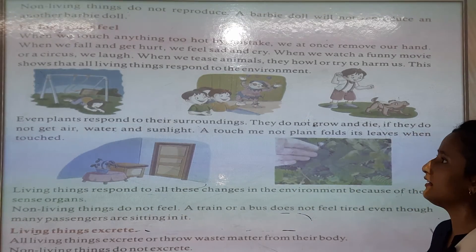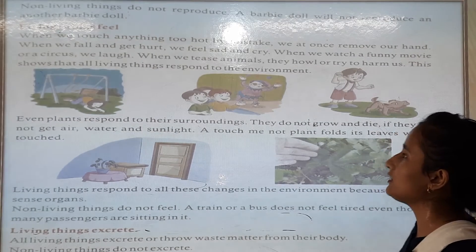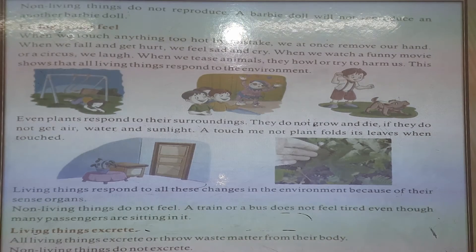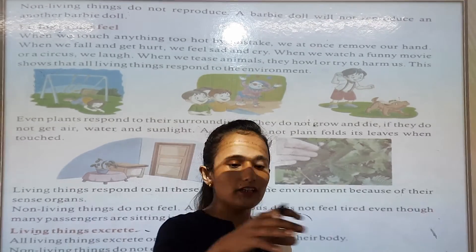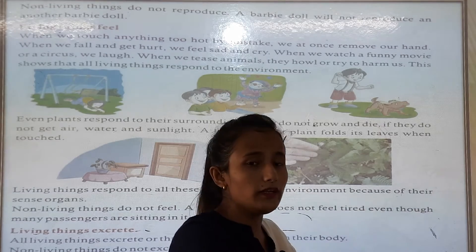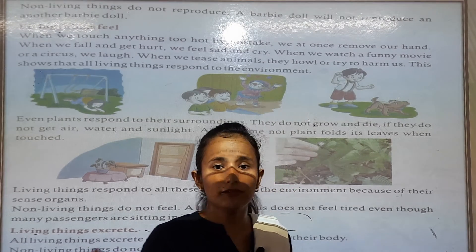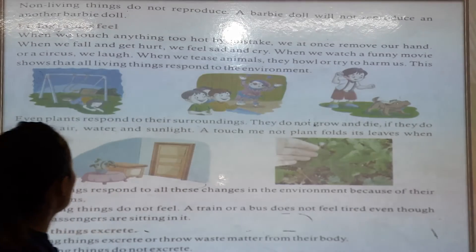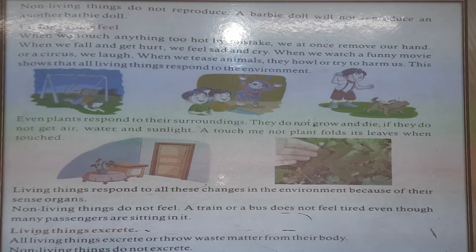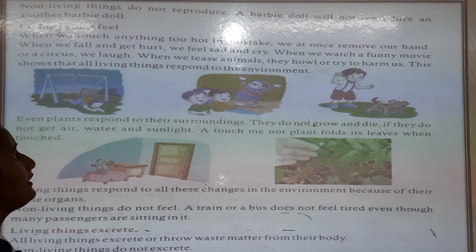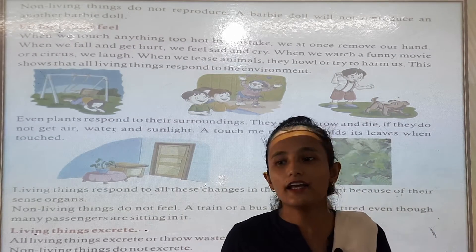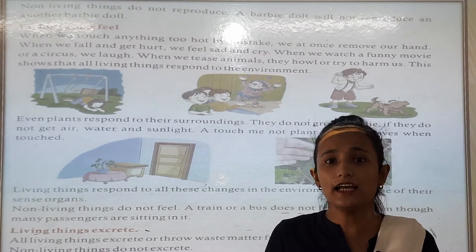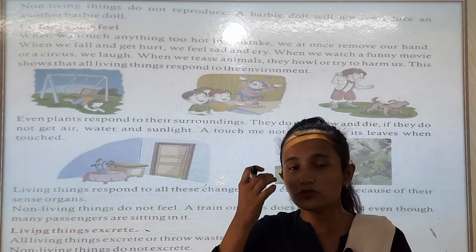We are going to learn how living things feel. When we touch something hot by mistake, we at once remove our hand — for example, if you grab a hot cup of tea, you will pull your hand away immediately because you feel it. When we fall and get hurt, we cry.